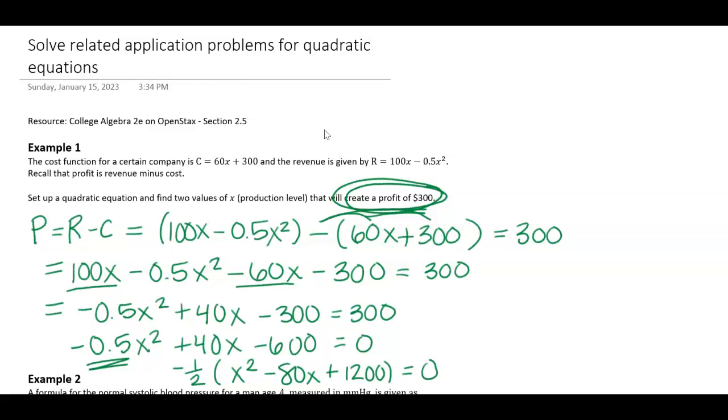So I need to figure out two numbers that multiply to 1200 and add to negative 80. After a lot of guess and check, what that's going to be is negative 20 and negative 60.